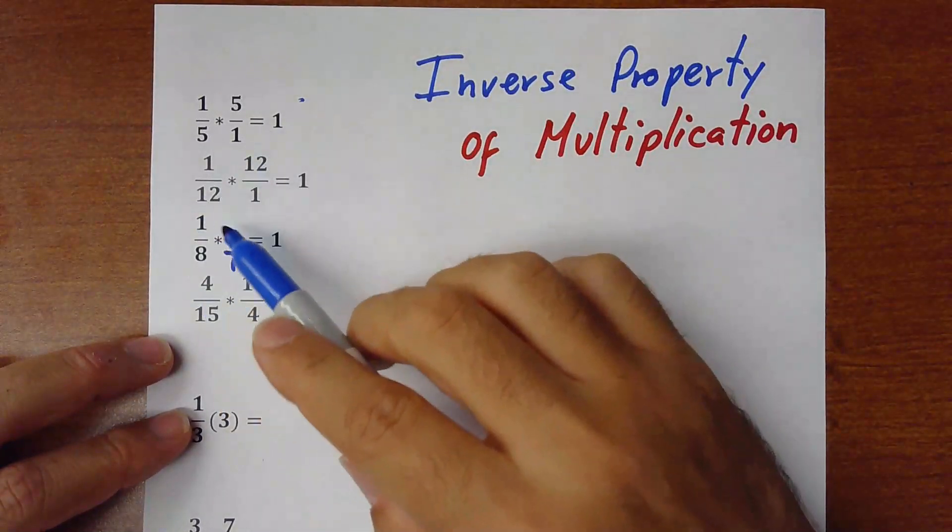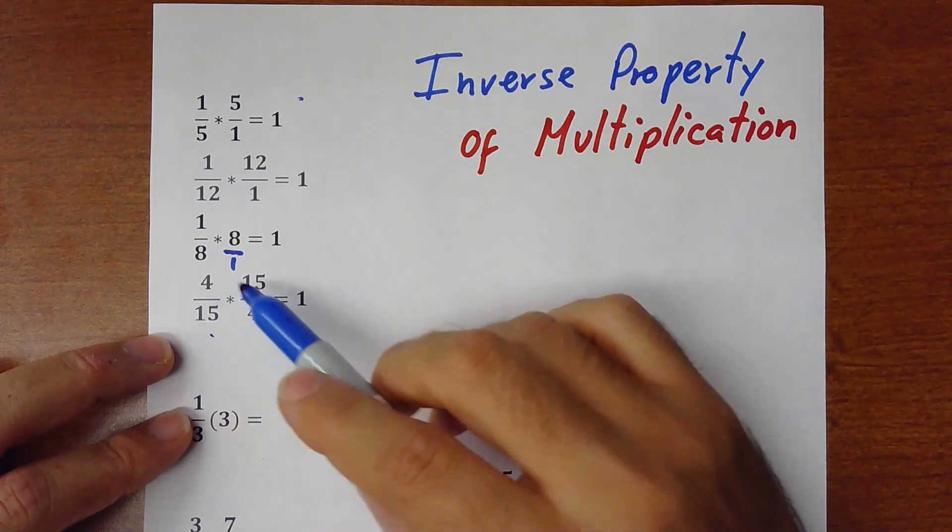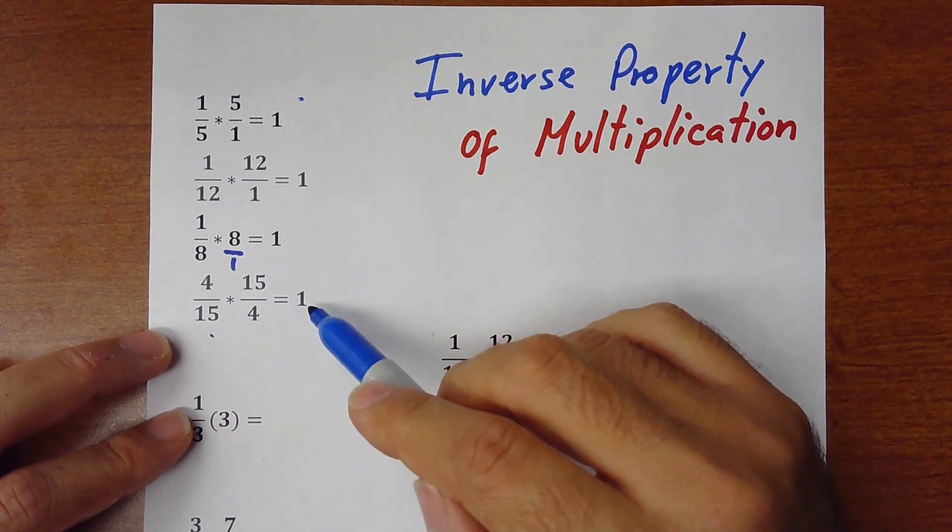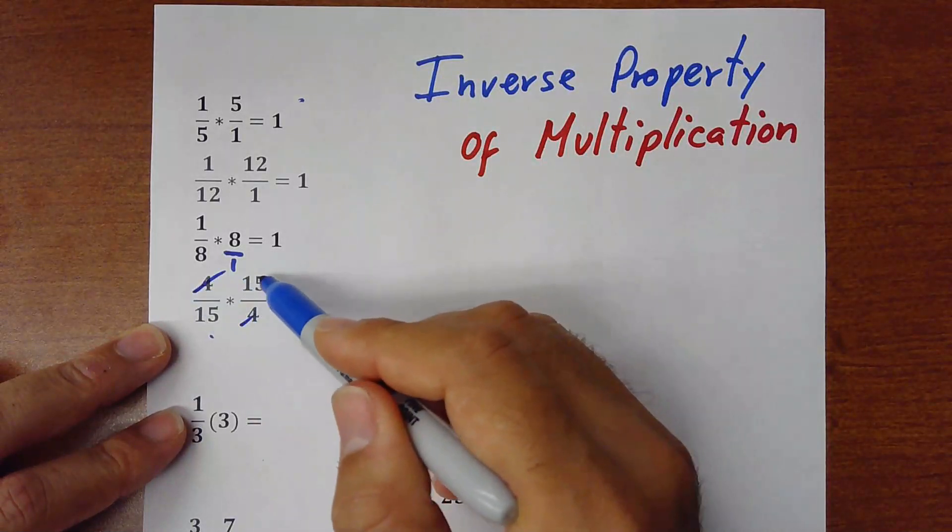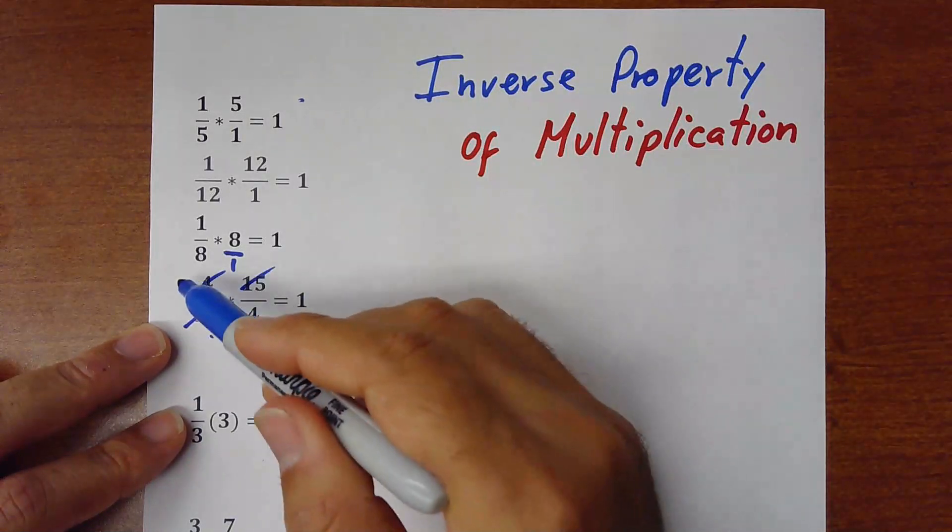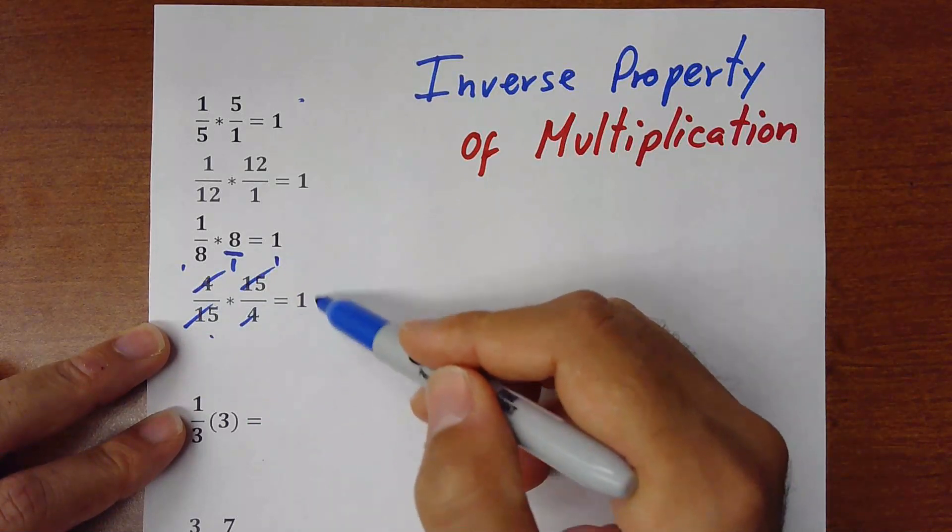Now it doesn't have to be all the time 1 involved. It could be 4 over 15 times 15 over 4. That's also the inverse. So the answer would be 1. Because this 4 you simplify with the 4, the 15 you simplify with the 15. And that would be 1 times 1 is 1, 1 times 1 is 1, 1 over 1 is 1.